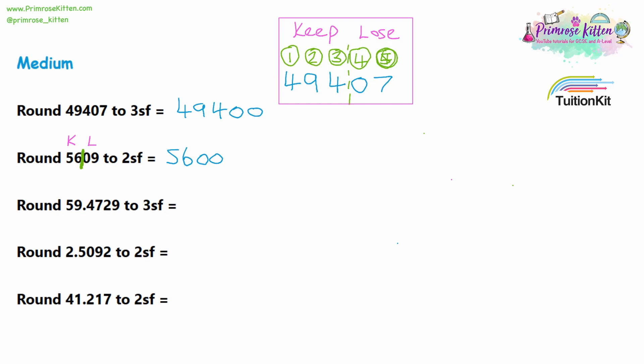For question three, it's three significant figures. I'm ruling off after the third digit. So three, nine, and point four are the first three significant figures. The first number I'm losing is a seven, so I will be rounding up. So I'm not going to write 59.4 — I'll write 59.5.